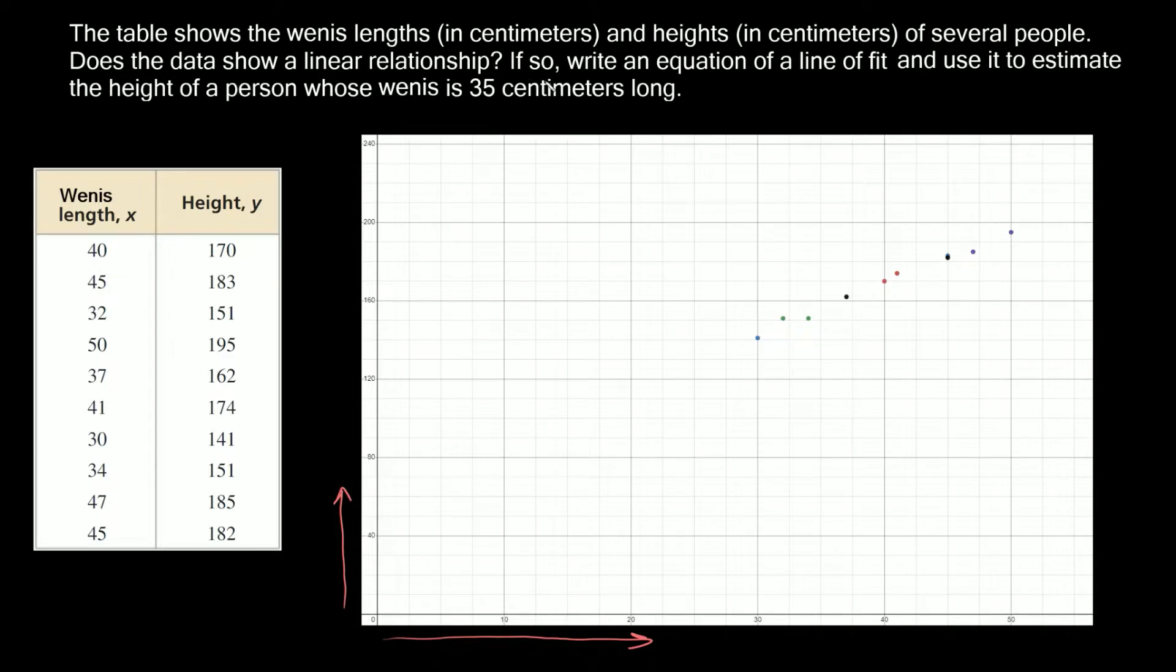The second part says if so write an equation of a line of fit. To write an equation of a line of best fit, the first thing we have to do is draw a line through our points. Just grab something straight—a ruler, a book, a phone—and we're going to draw a straight line. You can still see all the points are really close to this line. Now we have to write the equation of this line.